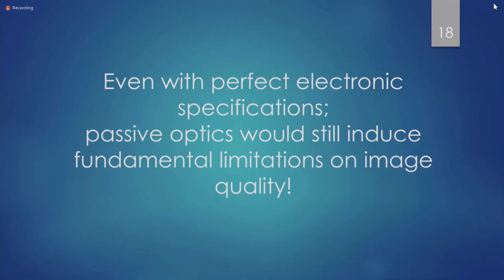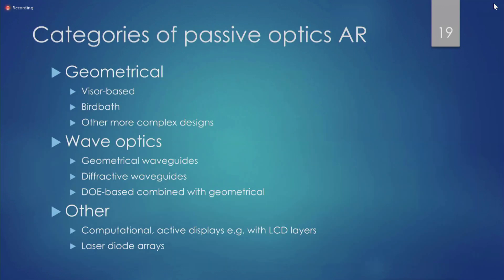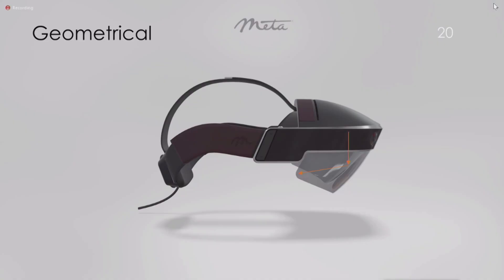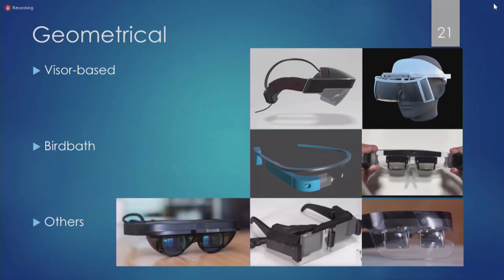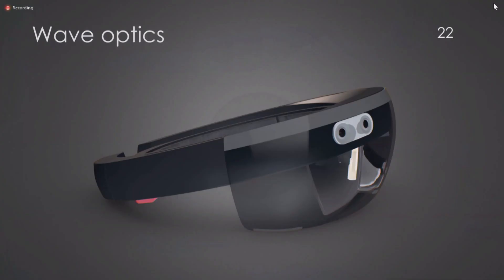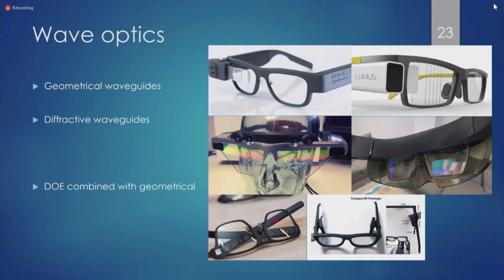I wanted to go through the two types of passive optics used across the entire market: geometrical optics and waveguide optics. Meta was perhaps the flagship for geometrical optics — those are all geometrical optic headsets. Wave optics is mostly led by HoloLens and Magic Leap.